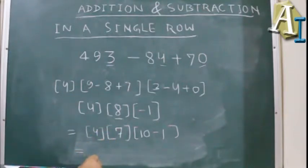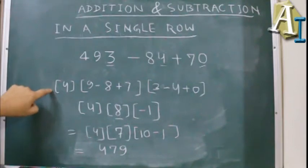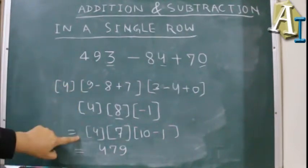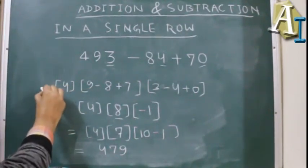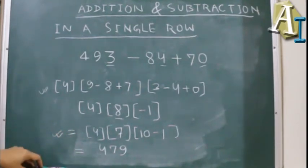So now our answer is 479. We are doing this step; we will exclude this step. We will do it in our mind. We don't have to write it here. These two steps are only to make you understand this question. Keep practicing it and you will find the difference. Thank you.